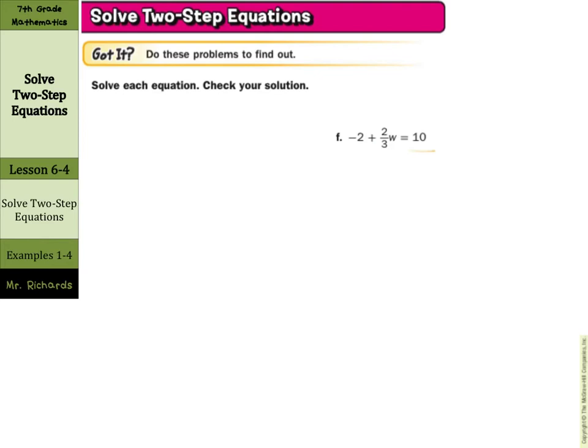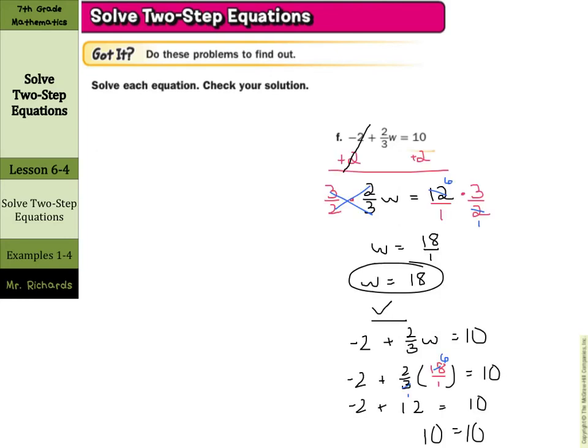In our last example on this page, example f, we have negative 2 plus two thirds w equals 10. Why don't you go ahead and try this one on your own as well. So here you can see your work to get to w equals 18, and let's make sure we understand how we get there. Hopefully your work matches this. If you add 2 to both sides to start, you're left with two thirds w equals 12. Now multiply by the reciprocal of two thirds, which is three halves, on both sides. What you'll notice that I did was I rewrote that 12 as 12 over 1. The three halves times two thirds cancel, so we're just left with w on the left side. Now I did cross-simplify here, the 12 and the 2 to get 6 and 1, so I could just multiply 6 times 3 is 18 over 1. But either way you do it, w equals 18.